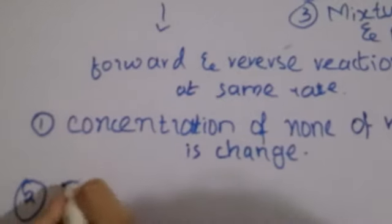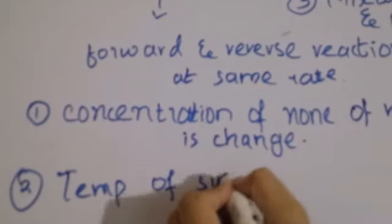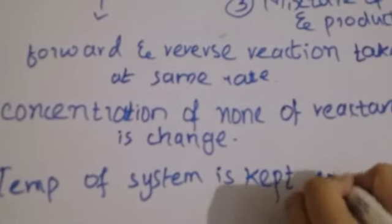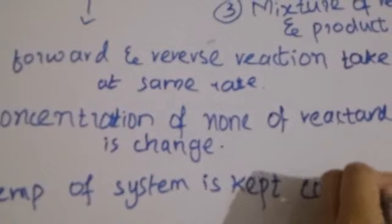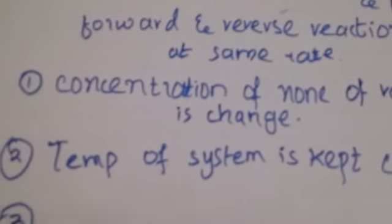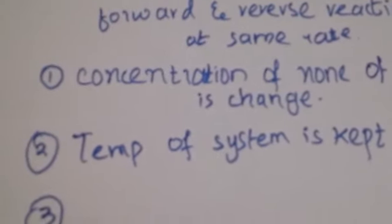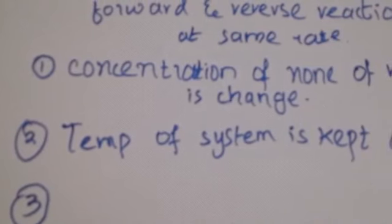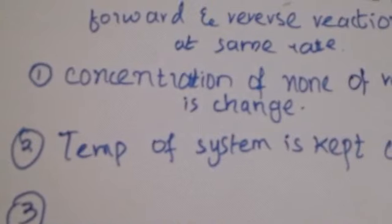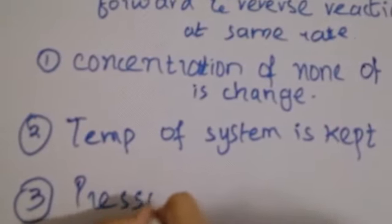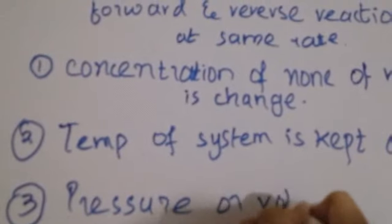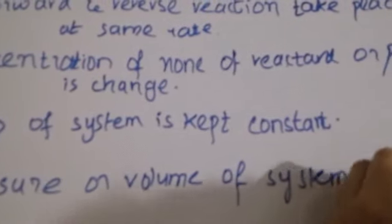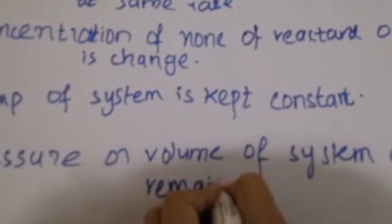The second condition for equilibrium is that the temperature of the system must be kept constant. Temperature constant means the temperature does not change once the reaction has started. Similarly, the pressure and volume of the system must also remain constant — they will not change either.